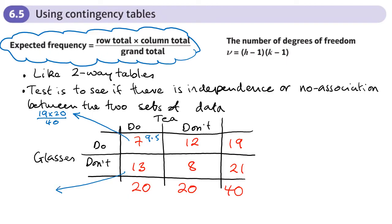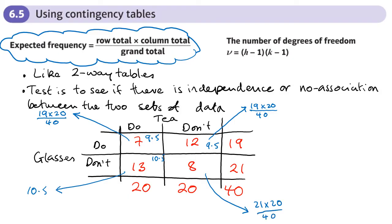For the next cell, the expected total would be the row total 21 times the column total 20 divided by the grand total 40, so I'd expect that to be 10.5. For the third cell: 19 times 20 divided by 40, that's 9.5 again. And for the last cell: 21 times 20 divided by 40, which also gives 10.5.